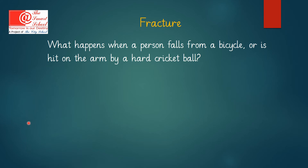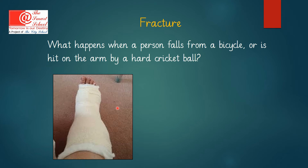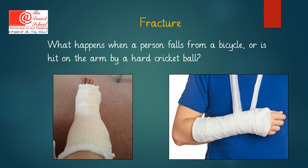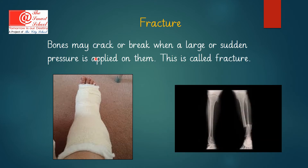Have you ever heard about someone who has been in an accident, maybe someone who fell from a bicycle, or was hit on the arm by a hard cricket ball? The person who was hit on the arm may break his arm. This is called a Fracture. Bones may crack or break when a large or sudden pressure is applied on them. Here you can see how a bone looks after a fracture on an X-ray, compared to a healthy unbroken bone.